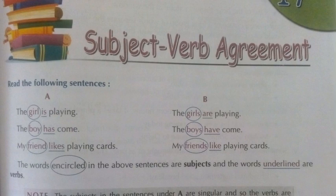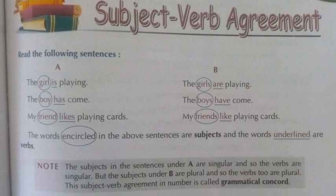Today's video will go along with your book — you can follow your book together. First, if we look at example Part A and Part B, we can see that the first and second sentences are the same, with only the subject and verb differing. The first sentence is 'The girl is playing' — subject is 'the girl', helping verb is 'is'. The second sentence: 'The girls are playing' — subject is 'the girls', helping verb is 'are'.